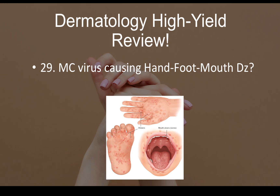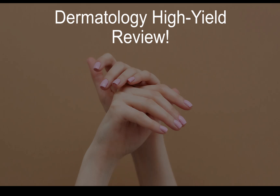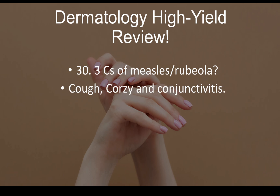Question number twenty-nine: most common virus causing hand, foot, and mouth disease is coxsackievirus A. Question number thirty: what are the three C's of measles (rubeola)? They are cough, coryza, and conjunctivitis.